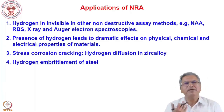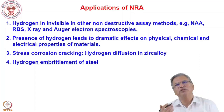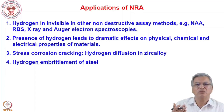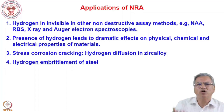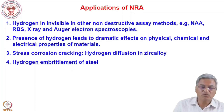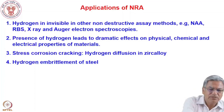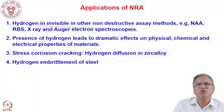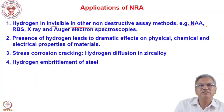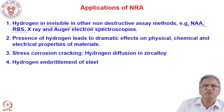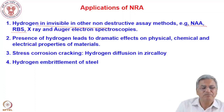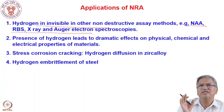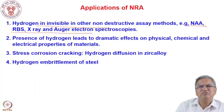NRA is a unique technique to probe hydrogen because hydrogen is invisible to many non-destructive techniques. Neutron activation analysis cannot detect hydrogen by NAA. RBS and forward scattering spectrometry are sensitive to heavier elements only. Hydrogen X-rays are extremely weak, so X-ray and Auger electron spectroscopy are not useful. Most nuclear analytical techniques cannot see hydrogen, and therefore NRA grew primarily because of its potential to determine hydrogen in materials.